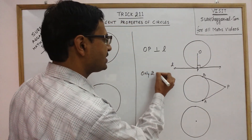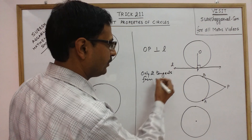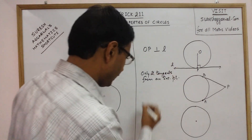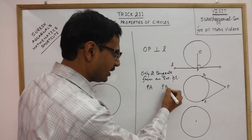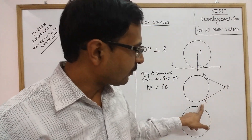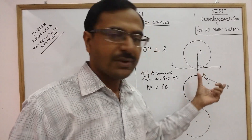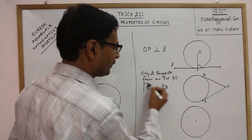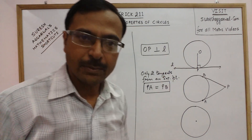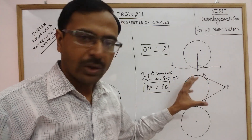These tangents PA and PB from the external point P are always equal in length. So if you measure from P to point of contact A, and from P to point of contact B, the lengths of these two tangents will always be equal. This is another very important property for competitions and for class 10 and above students: the lengths of two tangents drawn from an external point are always equal.